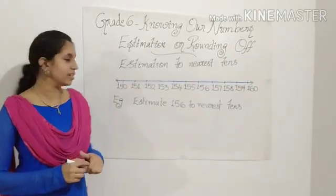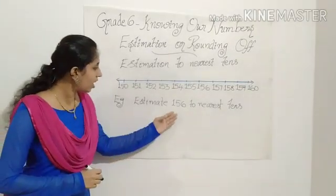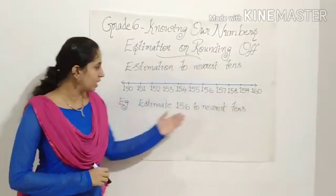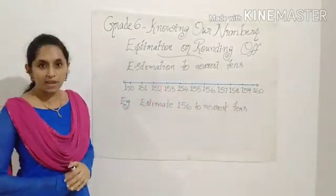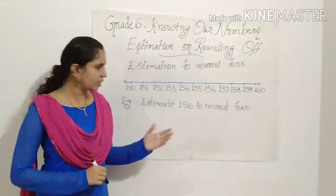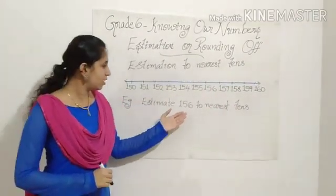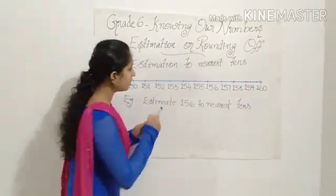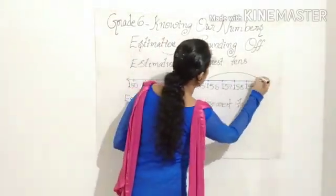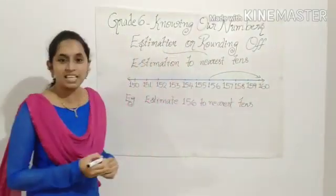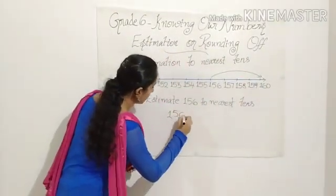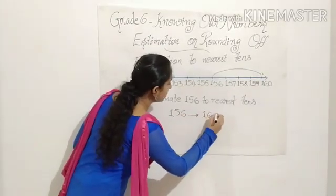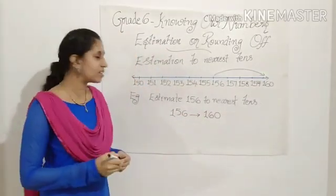Let's check some examples. The first example is: estimate 156 to nearest 10. You can see a number line in which I have written 150 to 160. Tell me what is the estimation of 156. 156 is near to 160, so the answer is 156 can be estimated to 160.